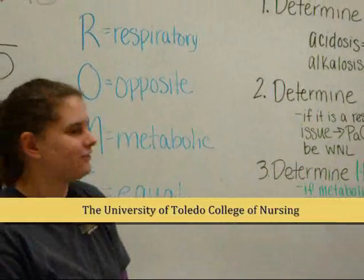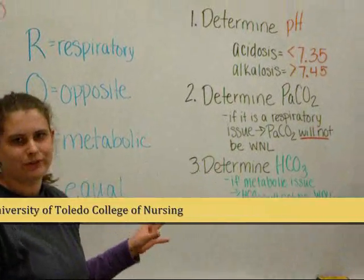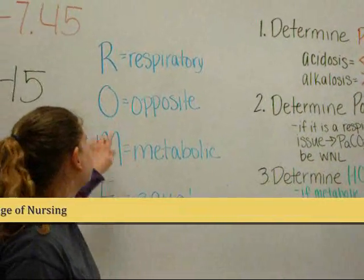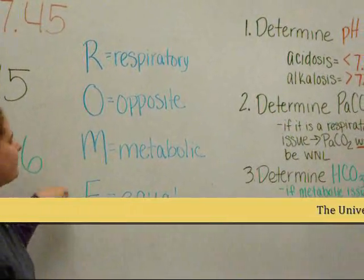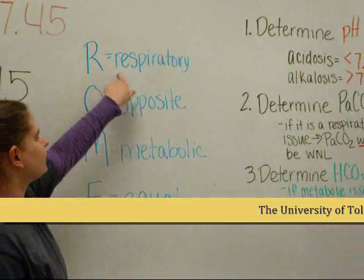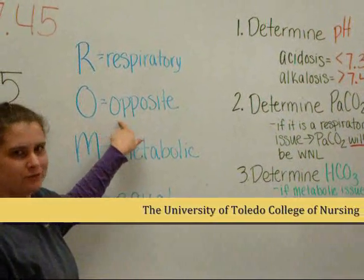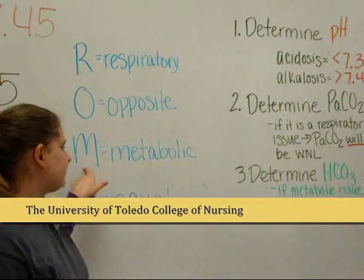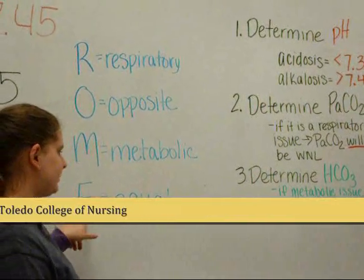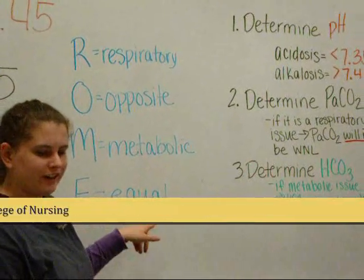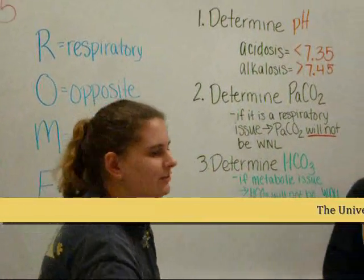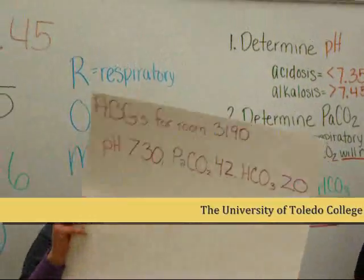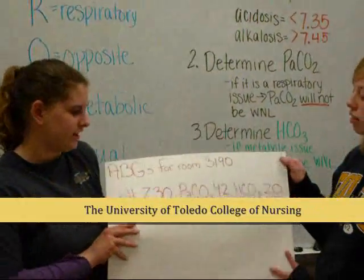Another way to remember if it's respiratory or metabolic is the mnemonic ROME. The R stands for respiratory, where the arrows will be opposite. If it's metabolic, the arrows will be equal. We'll demonstrate what that means with a practice ABG example.